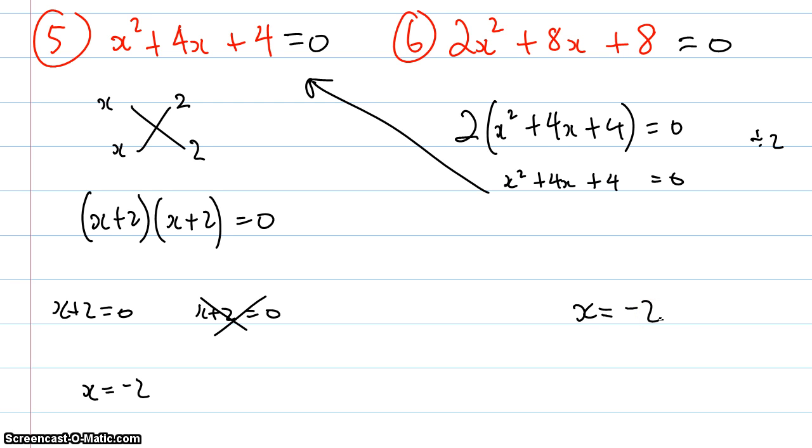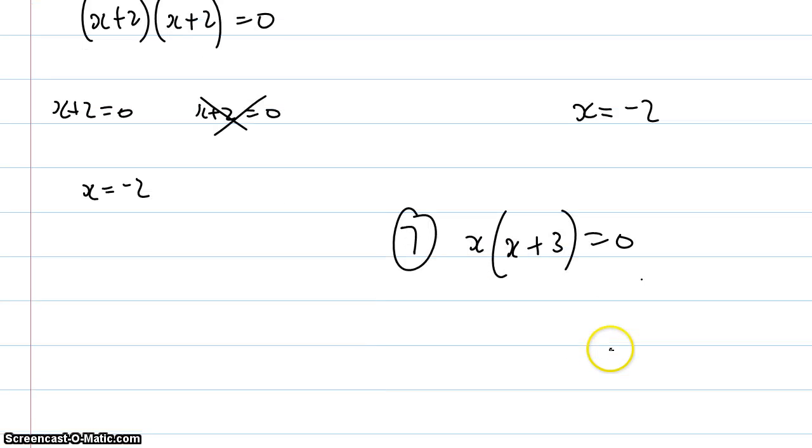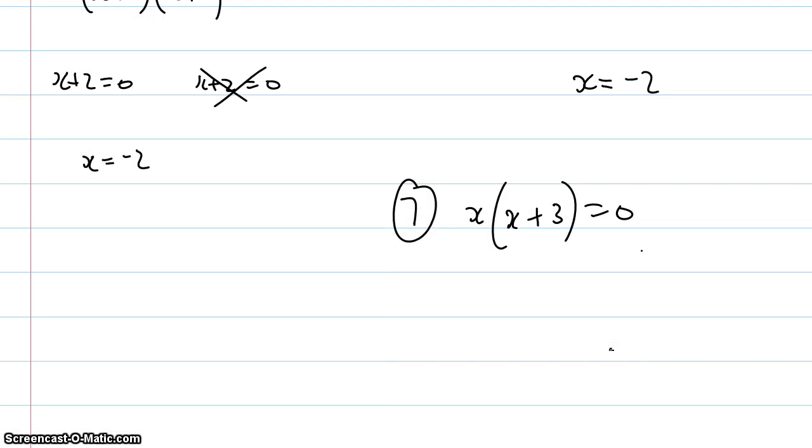I hope that's helped you to do some of these. One last little trick that I'll show you that occasionally comes up. I'll put this as number 7: x times x plus 3 equals 0.